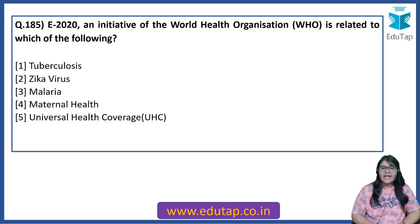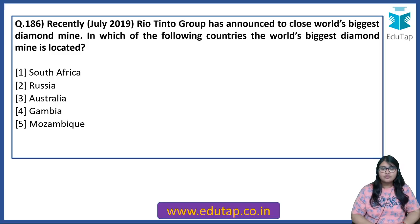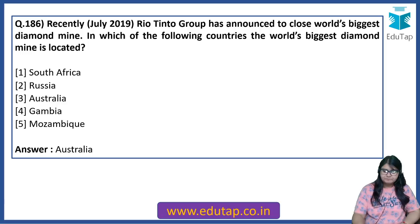E-2020 is an initiative of the WHO (World Health Organization) related to which of the following? It deals with the elimination of malaria — specifically, Achieve Malaria Elimination by 2020 in 21 countries. You can also discuss the headquarters of WHO as a probable revision. Recently, Rio Tinto Group has announced to close the world's biggest diamond mine — it is located in Australia.